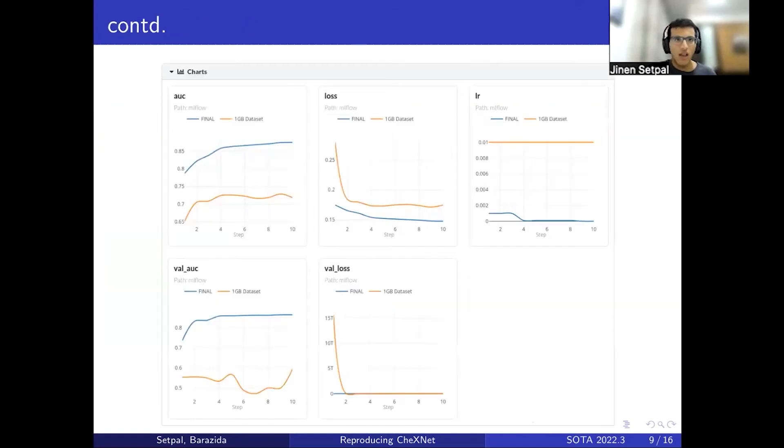These are the training metrics from the full dataset versus the one gigabyte dataset. One additional concern was that we had a higher learning rate for the one gigabyte dataset, which could have also contributed to the fact that the heat maps were not as accurate. We found out it was incorrect further on. As you can see, there is a very significant increase in AUC and a decrease in loss, completely attributed to the additional data.